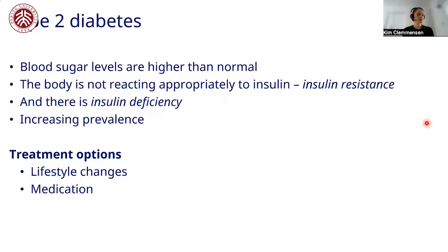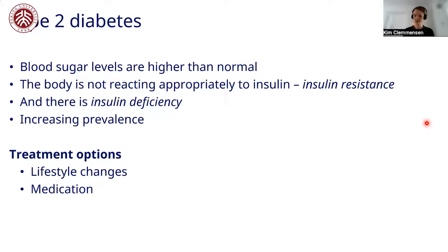When treating type 2 diabetes, we often start with lifestyle changes and then move on to medication. Lifestyle changes are of course really hard to find in real-world data — they are not often put into databases and registries — while medications are somewhat more accessible.